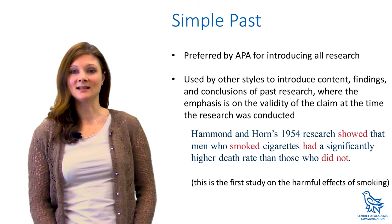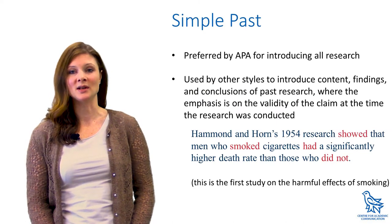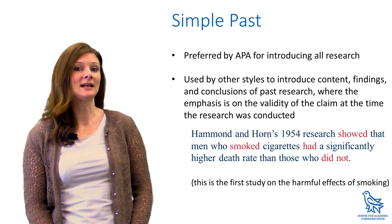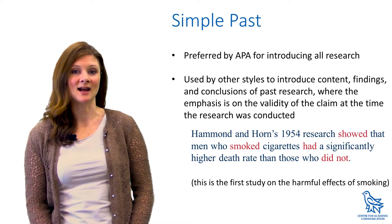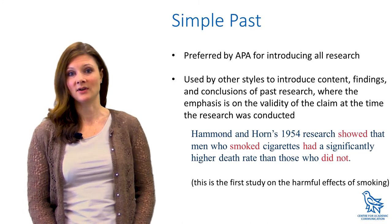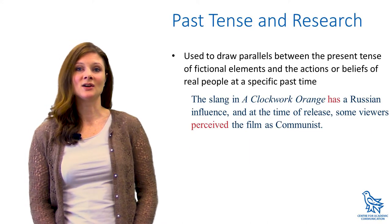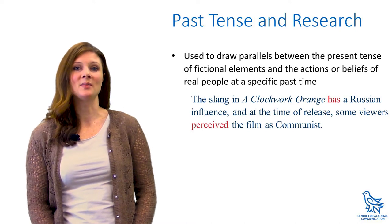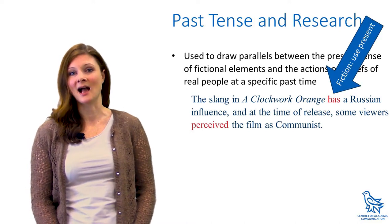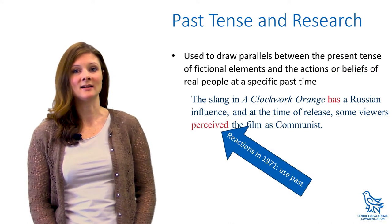In most academic fields, the past tense is used to introduce the content, findings, and conclusions of past research where the emphasis is on the validity of the claim at the time the research was conducted. APA style also prefers this tense for introducing research. In writing about literature and other topics, the past tense may also be used to draw parallels between the present tense of characters' actions and the actions or beliefs of real people at the time a book was written.